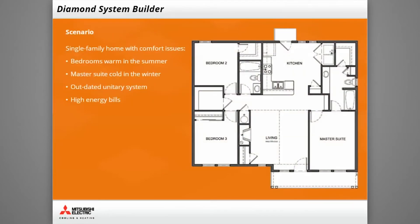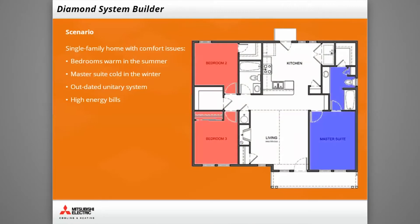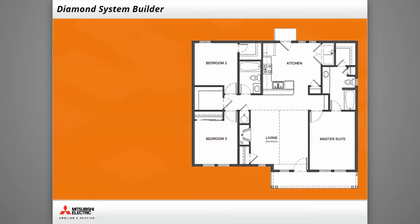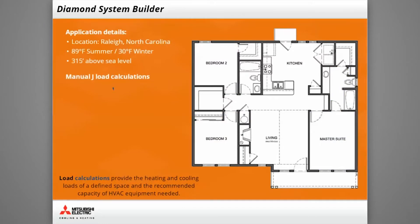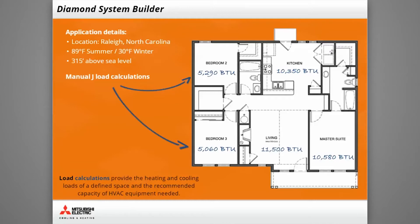Let's consider your typical single-family home. Some bedrooms are uncomfortably warm during the summer months and others are cold during the winter. The existing unitary system is dated and the owner would like to reduce their energy bills. Based on the application details and a manual load calculation, choosing the proper units should be simple. If necessary, pause the playback and review the application details again.